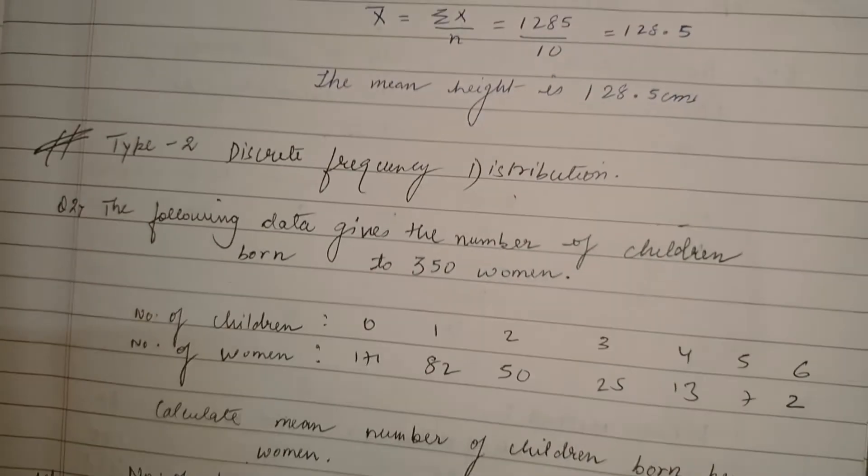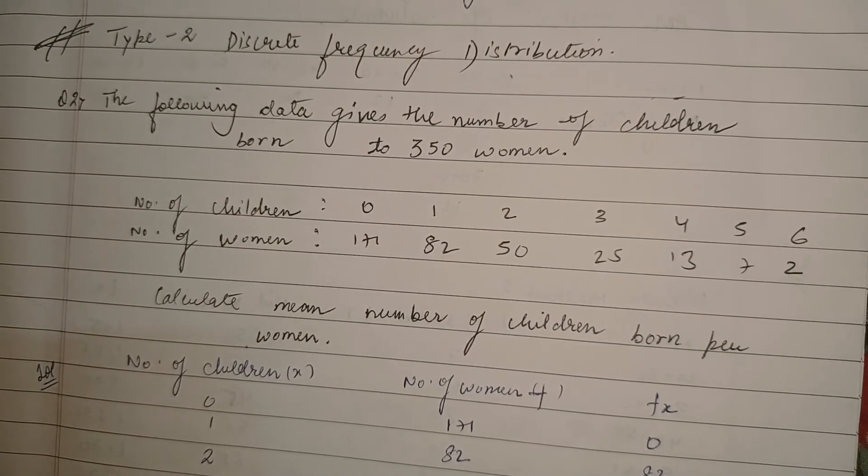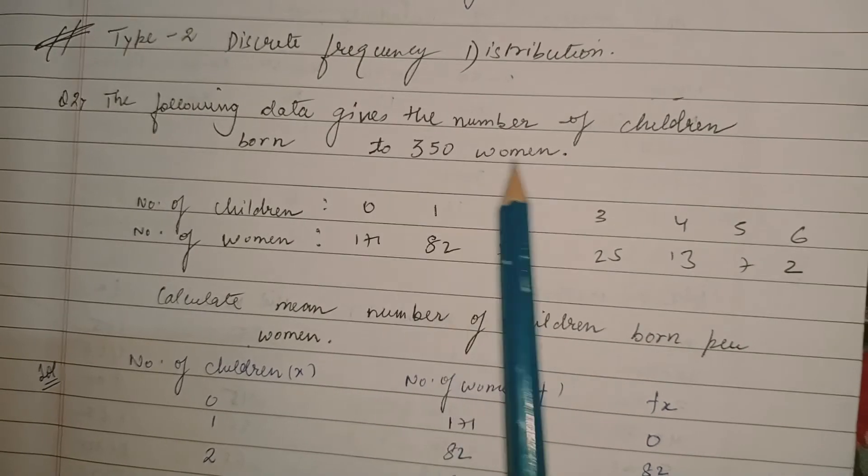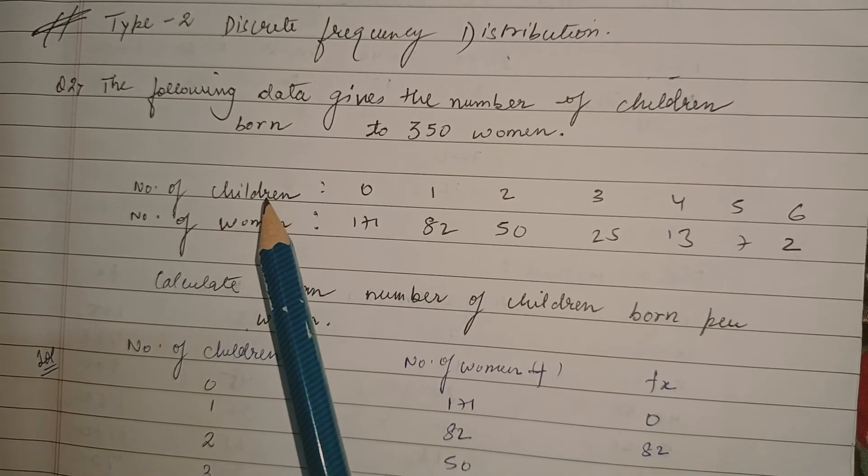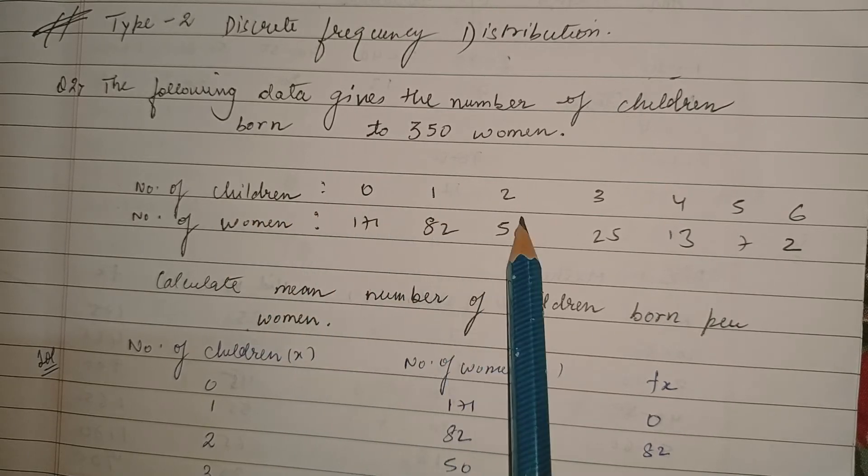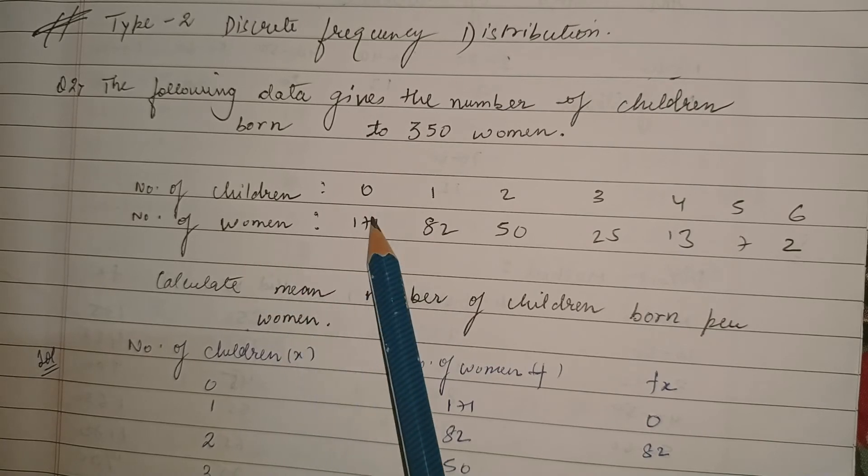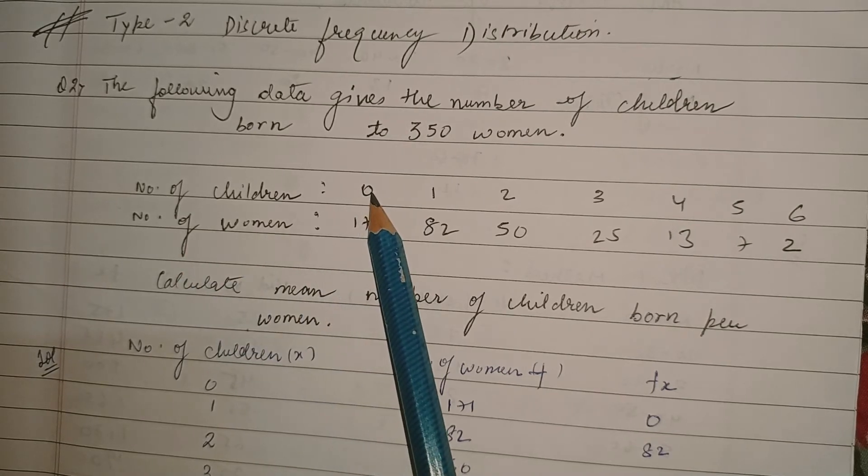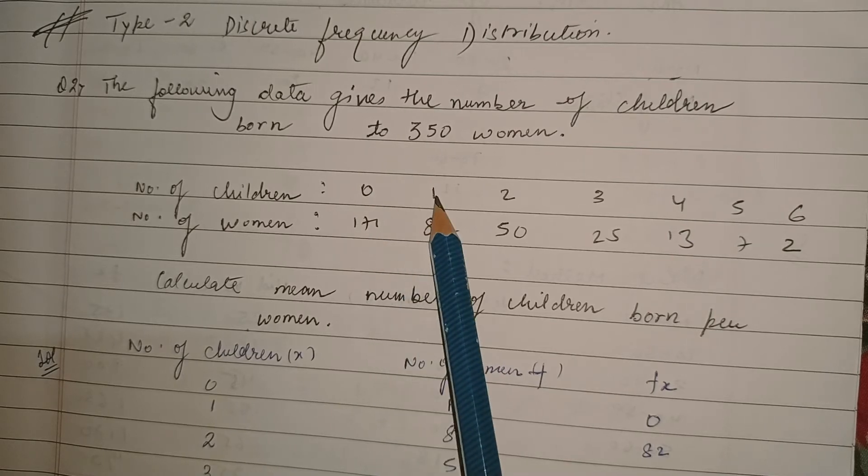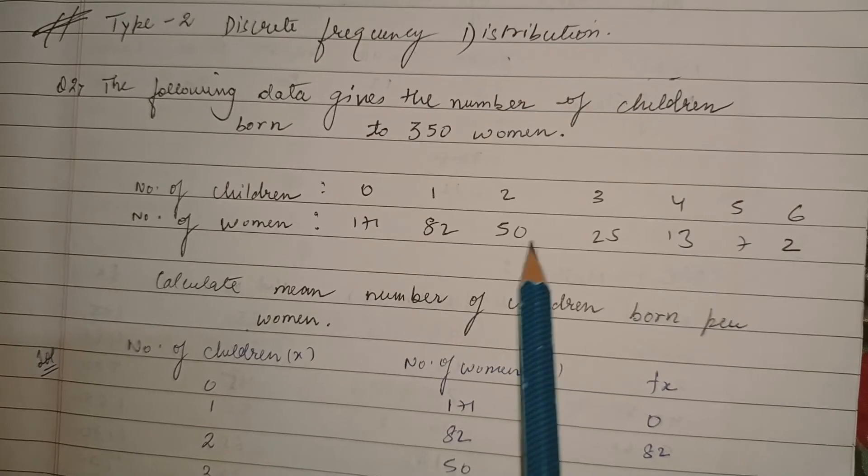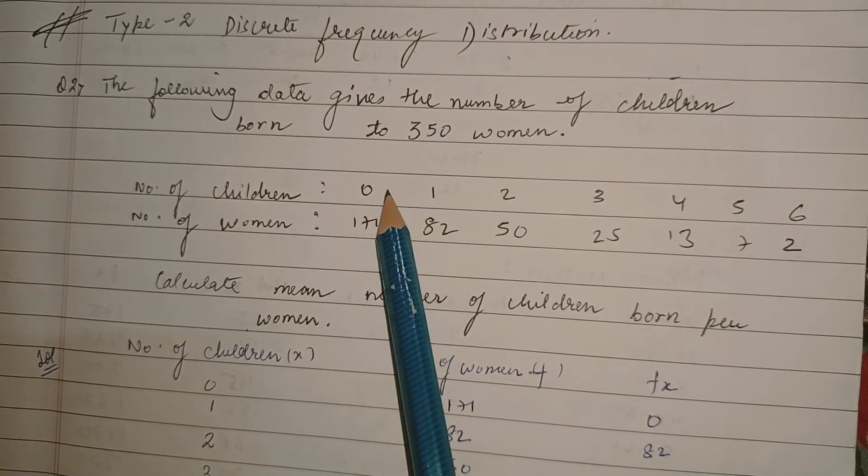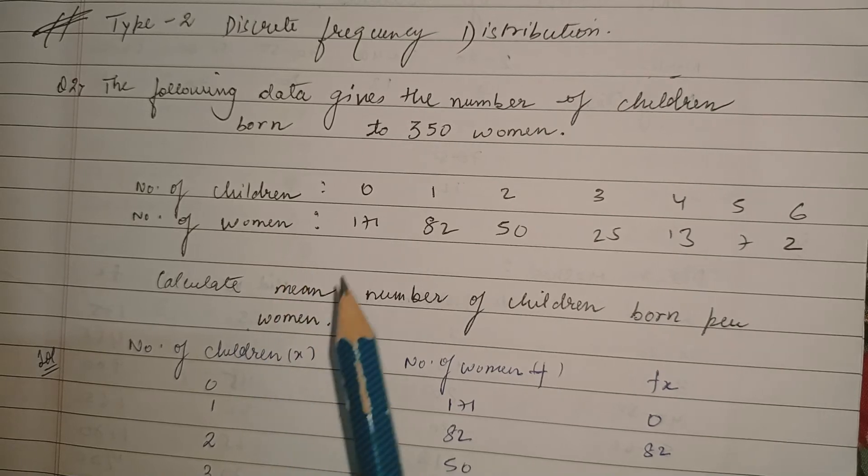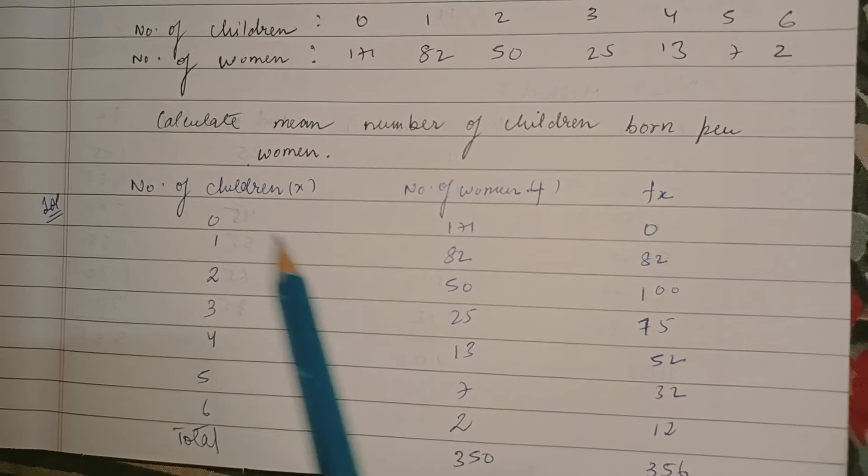Let us move to the second kind of problem, discrete frequency distribution. The following data gives the number of children born to 350 women. You are given variable values, x values 0, 1, 2, 3 and so on and their frequencies, number of women. Here the variable value is number of children and the frequency is number of women. So we would make a table like this and write the frequencies of each.